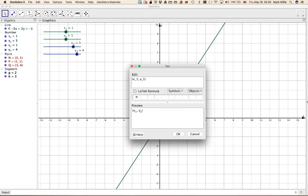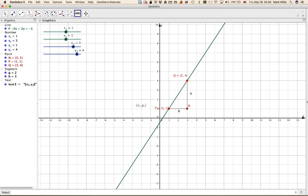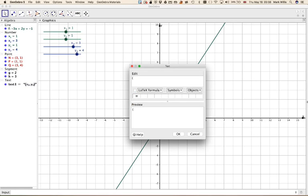You should maybe turn it to LaTeX formula. Okay, repeat it for this one here. So brackets, x underscore 2, y underscore 2.